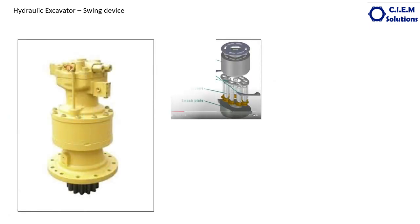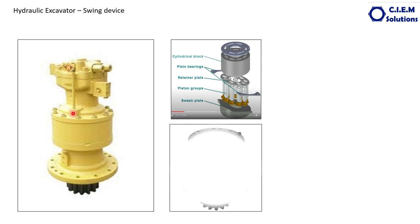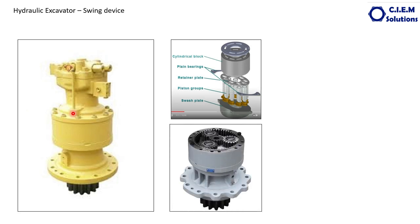The swing device looks like this. It is called a device because it has mainly two components. The first is the hydraulic motor — a simple fixed displacement axial piston motor, as discussed in previous videos — which gives the input drive to the bottom component, which is called the swing gearbox. The swing gearbox is a double reduction planetary gearbox.